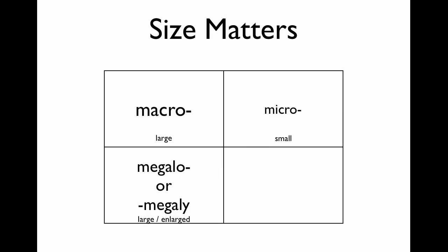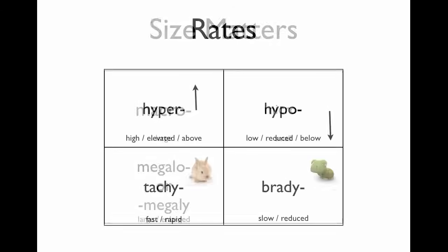A lot of terms — prefixes especially — relate to size. Size matters, of course. Macro means large. Micro means small. You probably know those. Megalo or megale means large or enlarged.